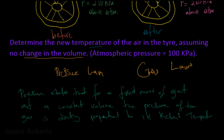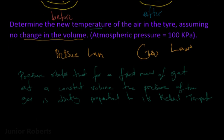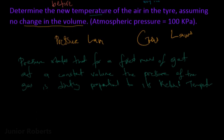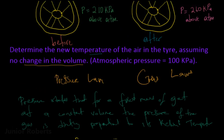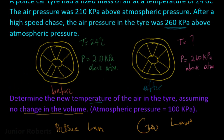We have a formula for the pressure law: P1 over T1 is equal to P2 over T2. The ratio of the initial pressure and temperature equals the ratio of the final pressure and temperature. We will use this equation to solve our question.